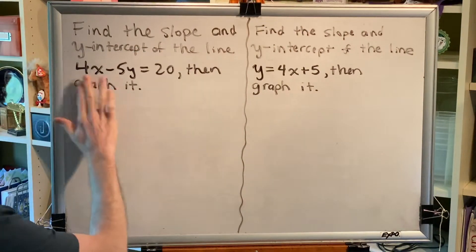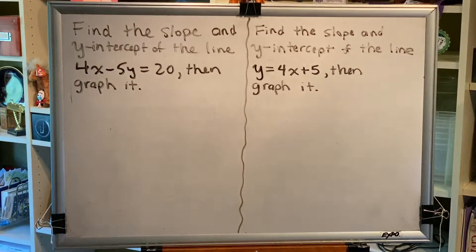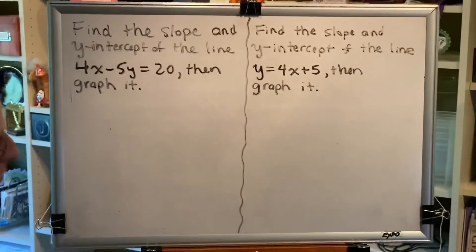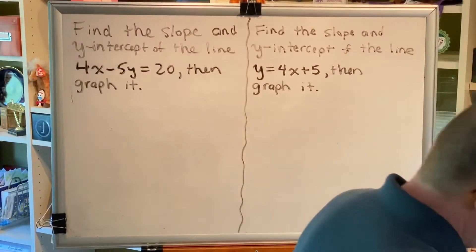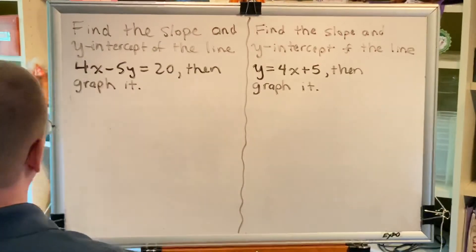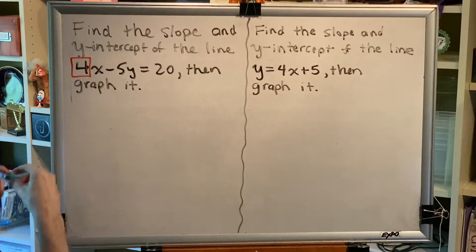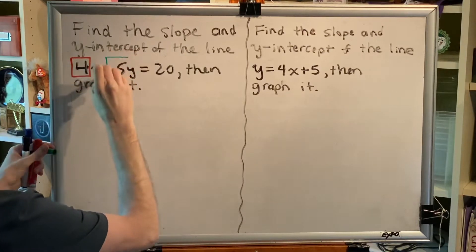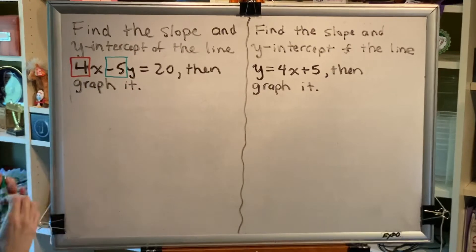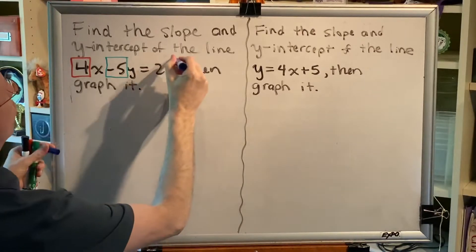Let's start with the first one, standard form. We learned that standard form is ax plus by equals c. Let's color code this. So, a is 4, b is negative 5, c is 20.